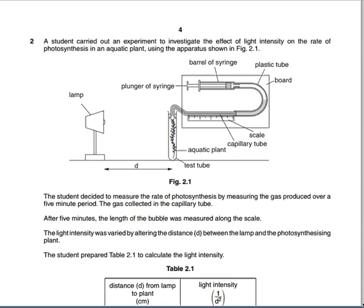This is 2011 - June 2011, I think. This is a rather interesting looking piece of apparatus. A student carried out an experiment to investigate the effect of light intensity on the rate of photosynthesis in an aquatic plant. The student decided to measure the rate of photosynthesis by measuring the gas produced over a five-minute period. The gas collected in the capillary tube was collected after five minutes.